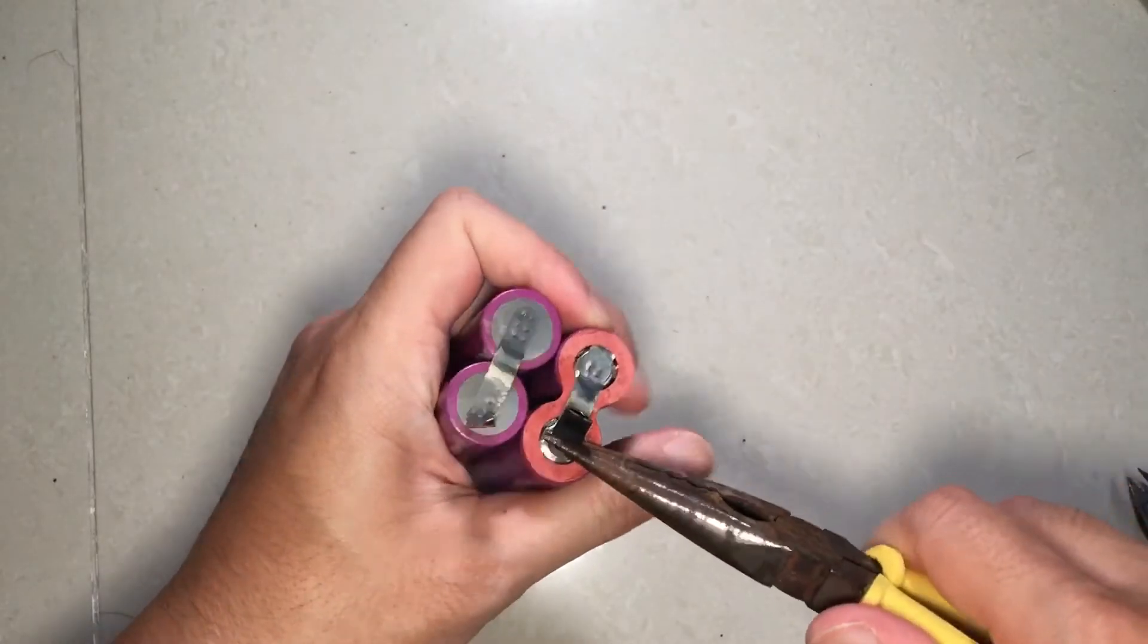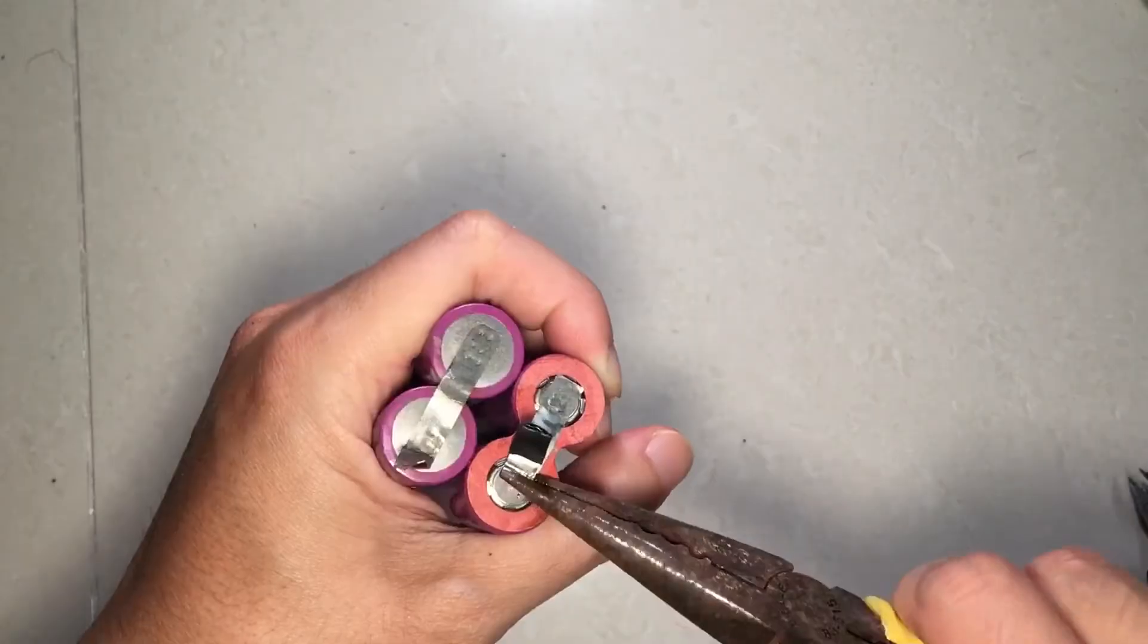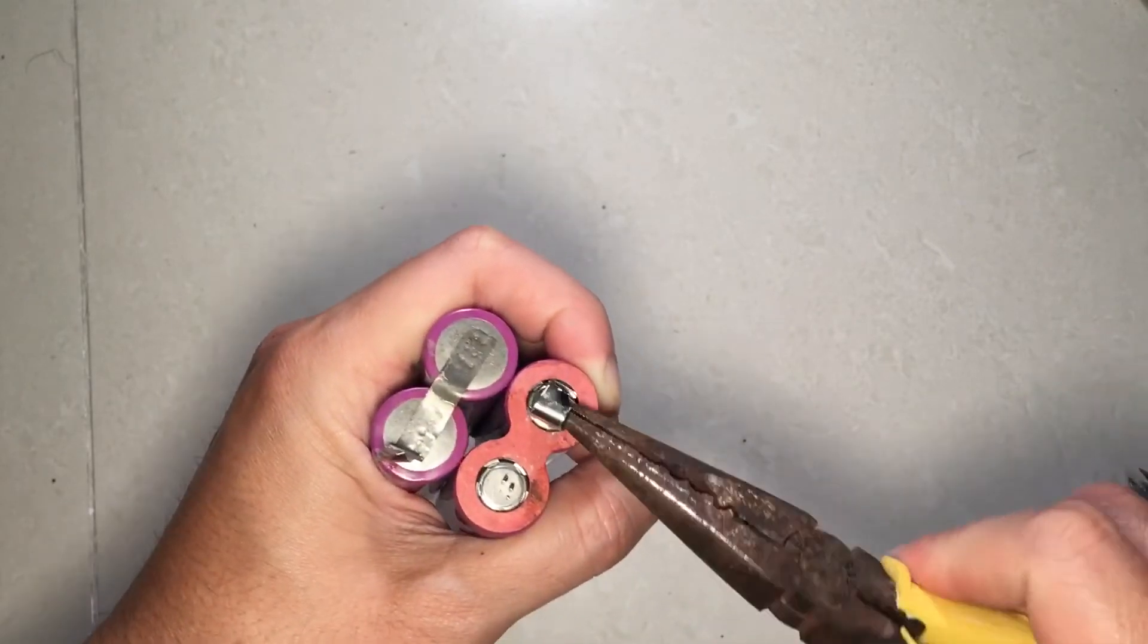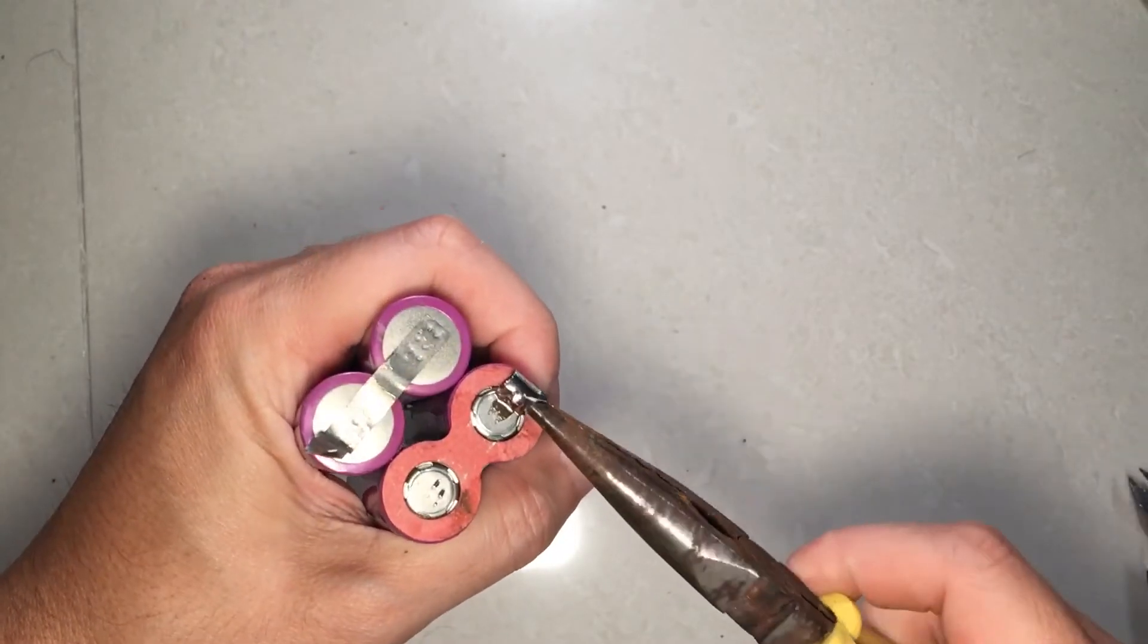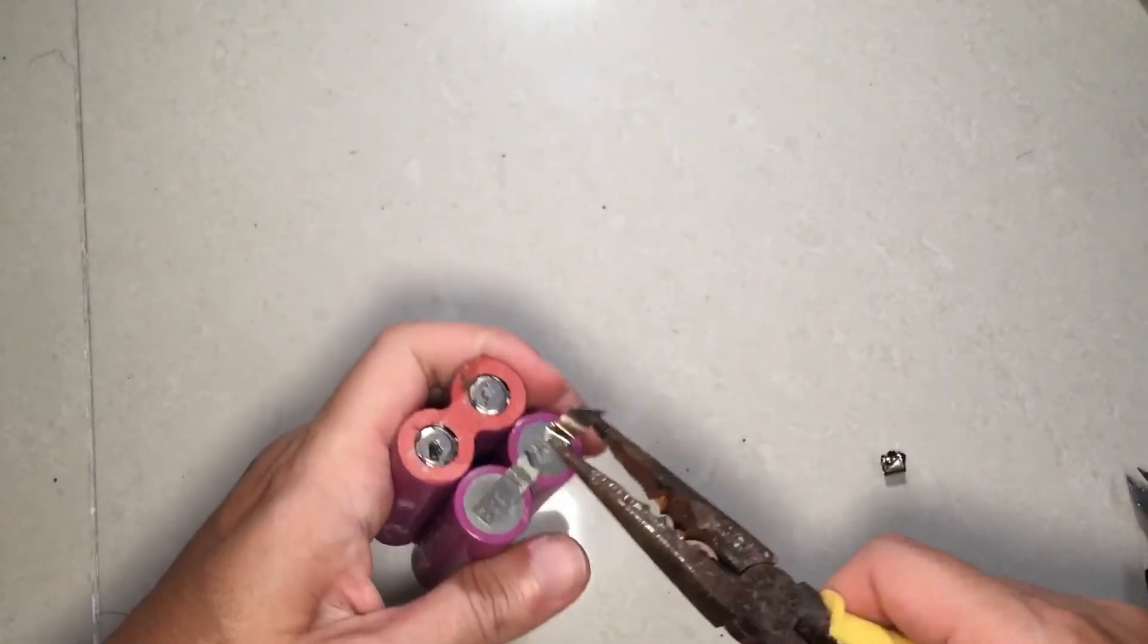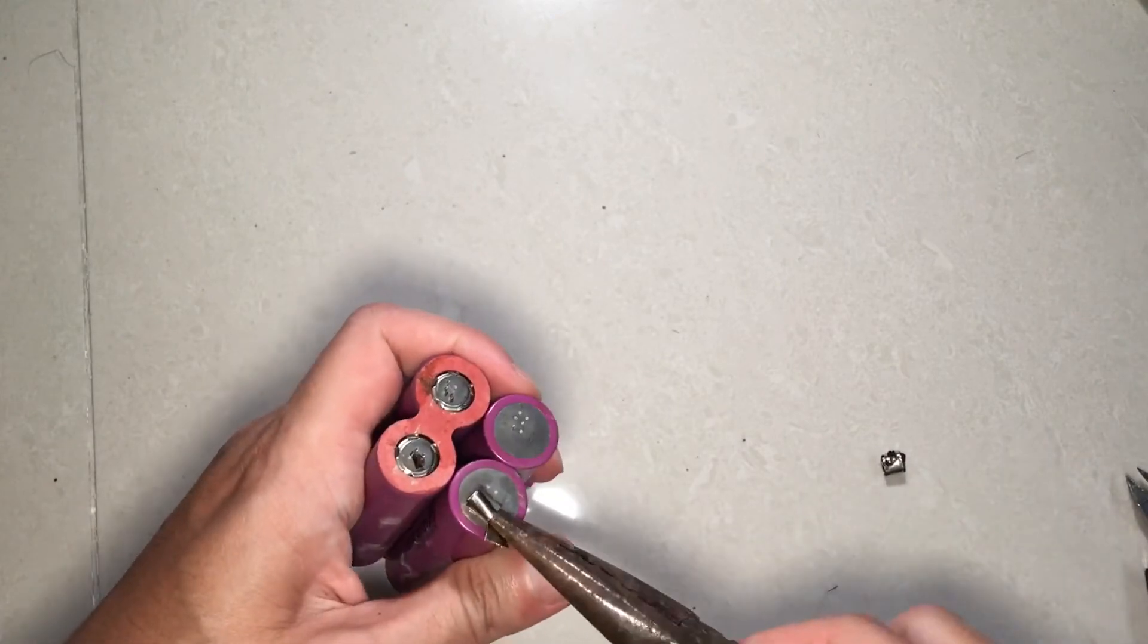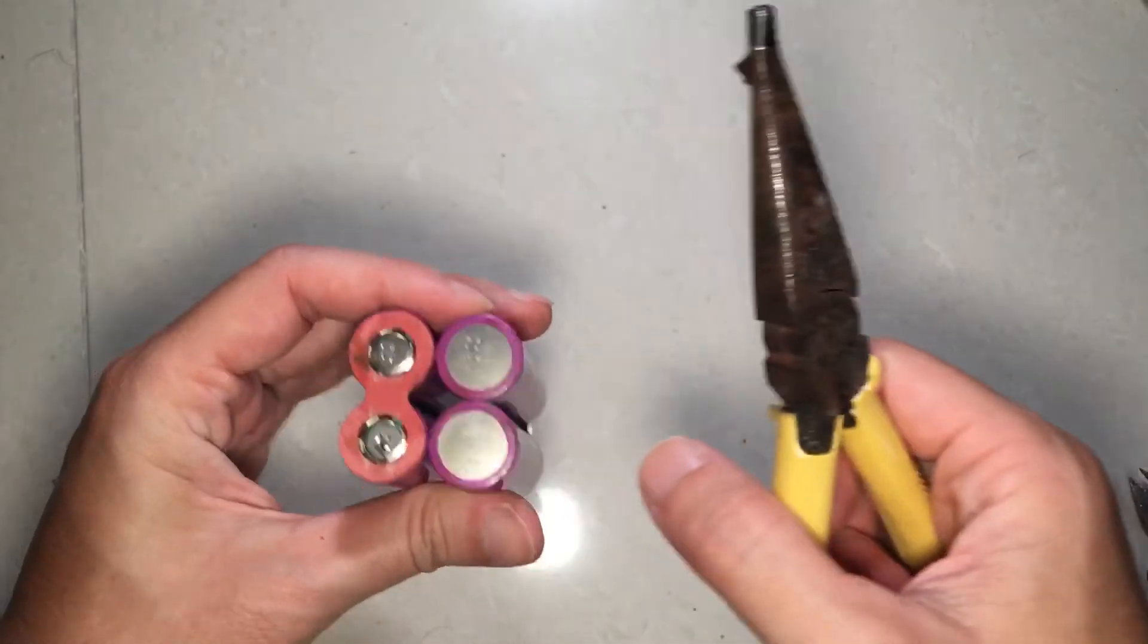So removing the tabs, I find that it is best to slowly twist it, a bit like opening up a can. So again, while doing this make sure you're not damaging the batteries. We'll do this as cleanly as possible.